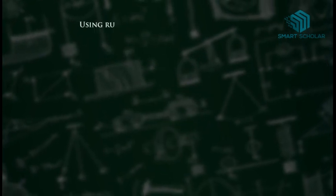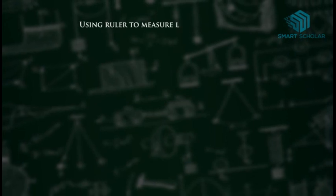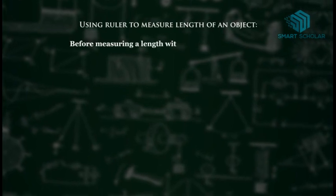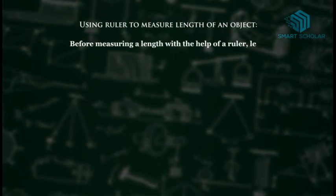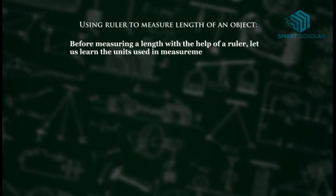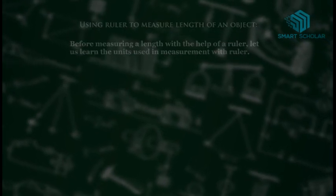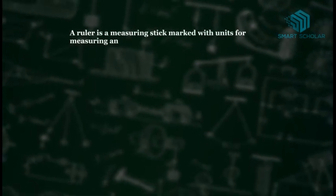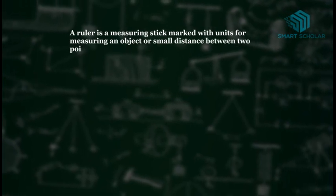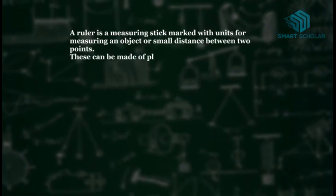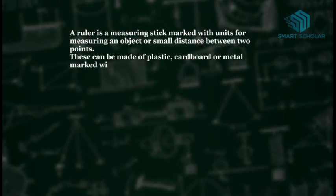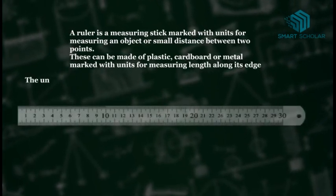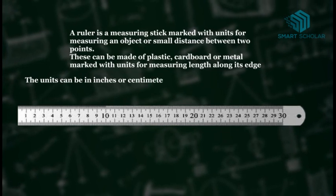Using ruler to measure the length of an object. Before measuring a length with the help of a ruler, let us learn the units used in measurement with ruler. A ruler is a measuring stick marked with units for measuring an object or small distance between two points. These can be made of plastic, cardboard or metal marked with units for measuring length along its edge. The units can be in inches or centimeters and millimeters.